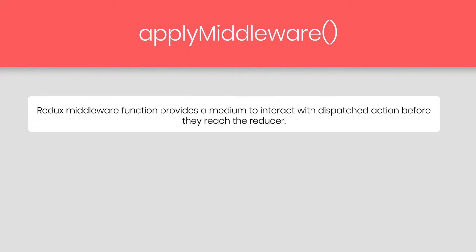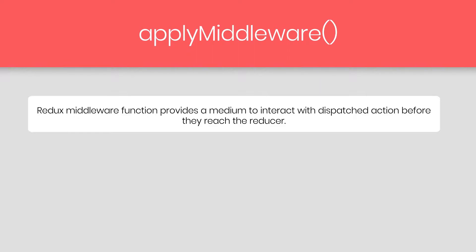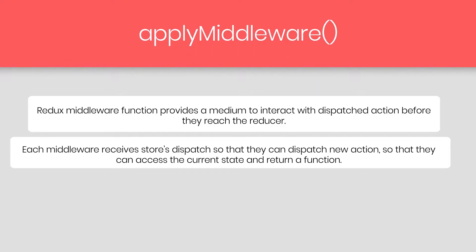What is a middleware function? Redux middleware functions provide a medium to interact with dispatched actions before they reach the reducer. Each middleware receives the store's dispatch so that they can dispatch a new action, access the current state, and return a function. The common use case for middleware is to support asynchronous actions.